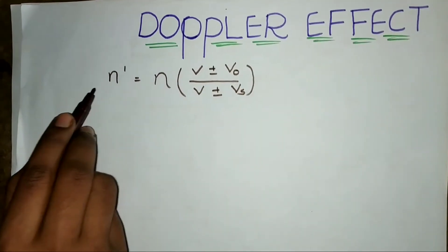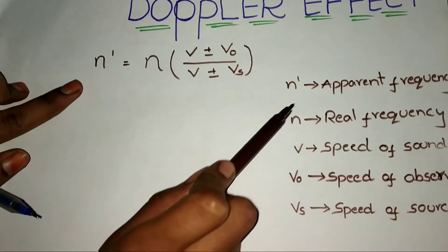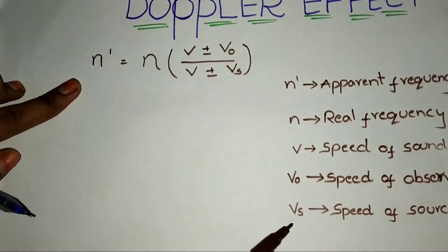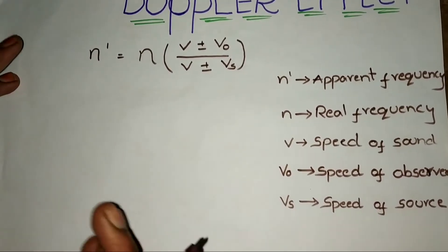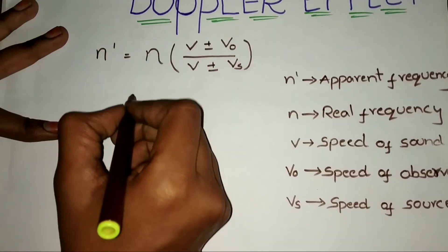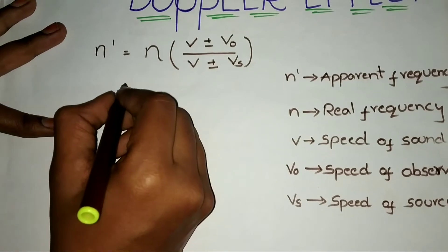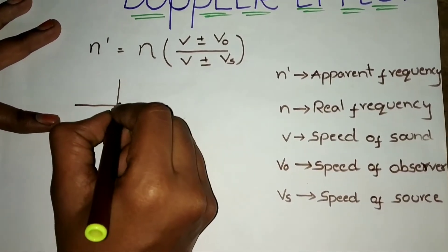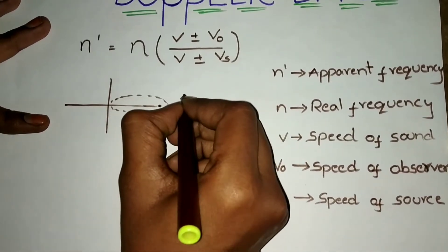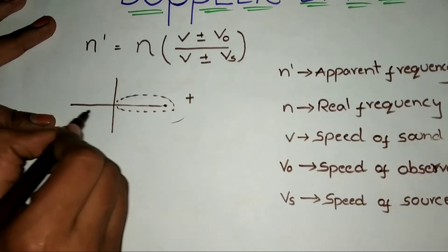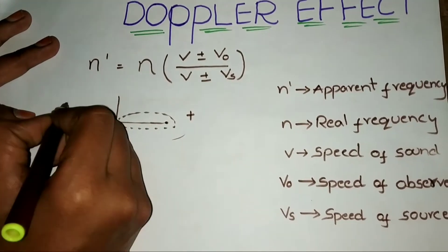This formula you have to remember. The terms are N, N-dash, V, V0, Vs. Next, what you have to remember is on the number line — the right part is positive value, and the left part is negative value.